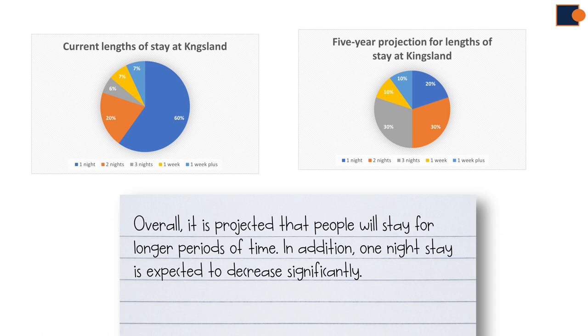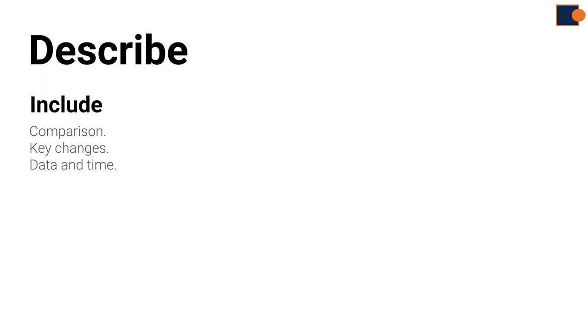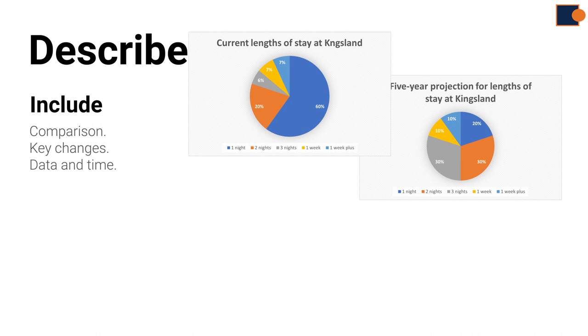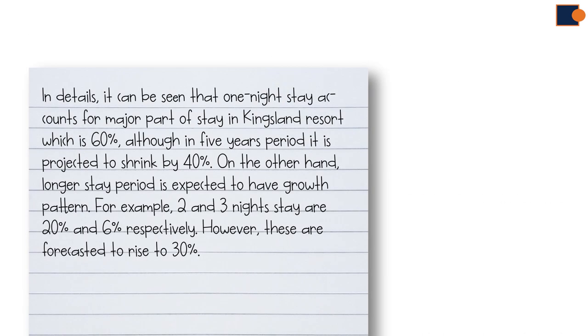It is also included as a noticeable trend, which is that one night stay decreases significantly from 60% to 20%, which is quite a significant decline. Part four: details. In the detail section, you must describe all key features in as much detail as possible, and you should include comparison, key changes, data, and time in your sentences. Let us examine each sentence in the sample.